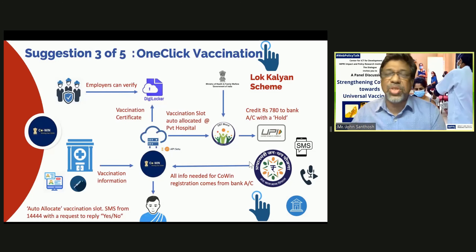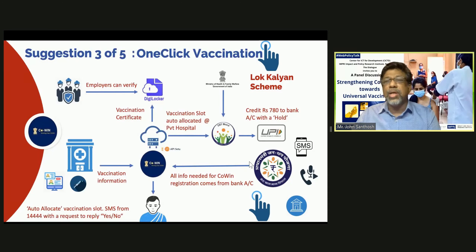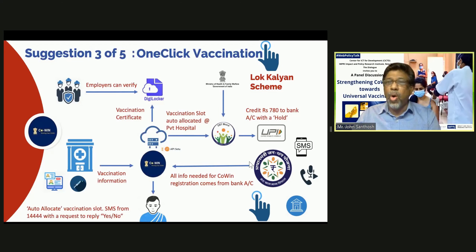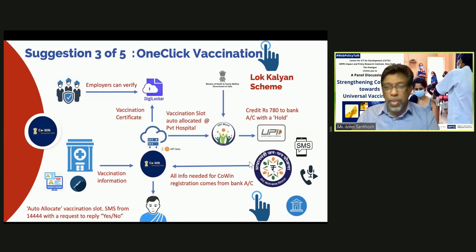When the person goes to the private vaccination center, the CoWIN app knows that the vaccine has been administered by that specific private hospital. It can then debit the beneficiary's account and credit the private hospital. So if you think about it, all that has been done is one click in the bank account to say 'I want to get vaccinated.' This wouldn't have been possible a few months back, but now, with the platform availability and the API sophistication that has come, this could be a real possibility.